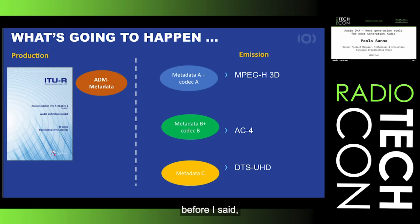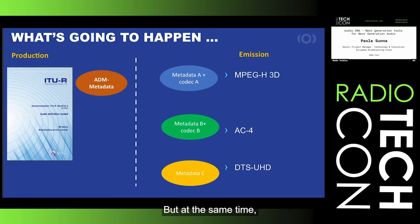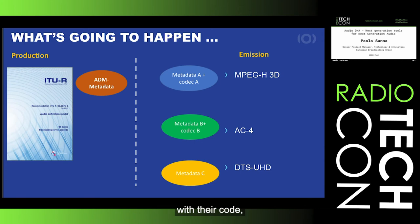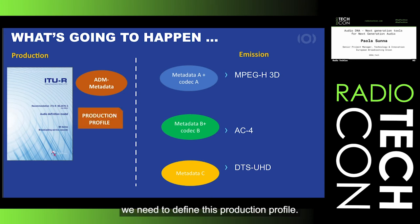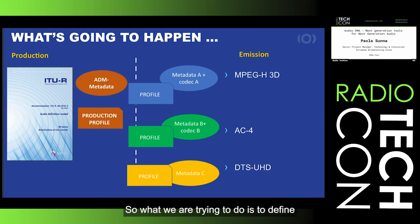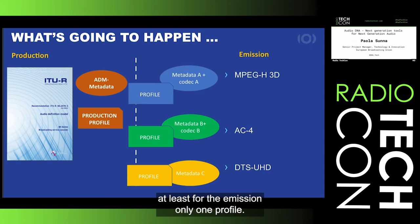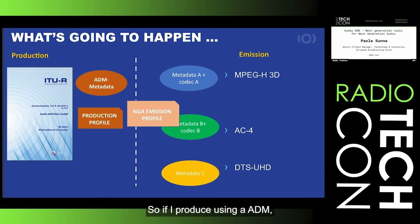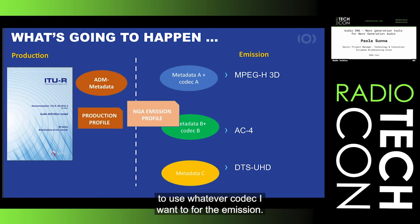What's going to happen next? At least in production, what EBU is trying to do is push for ADM metadata. On the emission side, we are going to have different next generation codecs with their own metadata and renderers. ADM is a very large standard, so we need to constrain it depending on the application by defining production profiles. These production profiles should then be mapped to the profiles supported by the different next generation audio technologies, so that if I produce using ADM according to a production profile, I should be able to use whatever codec I want for emission.